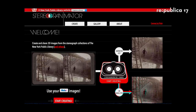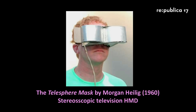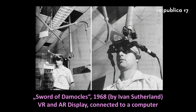In 1960 things changed. Morton Heilig created a Telesphere Mask with two screens so you could view 3D television — images began to move and became three-dimensional. Then the Sword of Damocles by Ivan Sutherland: this is the first HMD head-mounted display connected to a computer, and actually also an augmented reality display because you could see through the lenses.